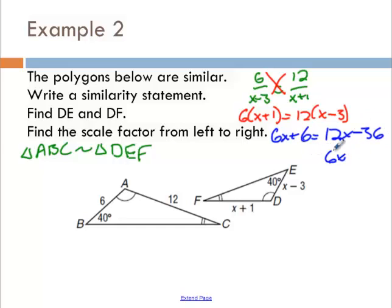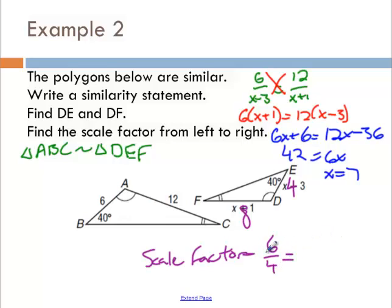When we distribute, 6X plus 6 equals 12X minus 36. When we go to solve, 6X equals 42, you get X is 7. So our two side lengths are 8 and 4. So we found DE and DF. And our scale factor is the ratio from one triangle to the other, and that is 6 to 4, which is 3 over 2. So our scale factor is 3 halves.